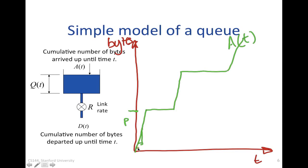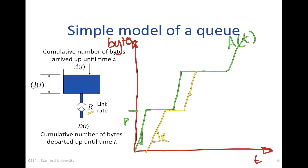Now let's draw the departure process D(t) in yellow. The departure process operates at rate r. After the first packet has arrived — assuming a store-and-forward model — it departs at rate r, so the gradient of D(t) is r. Once that packet is fully departed, we wait until a whole new packet arrives, then depart again at rate r, and so on. The key point is not the particular shape but that you can easily sketch the arrival and departure process, and from this immediately read some nice characteristics of the system.